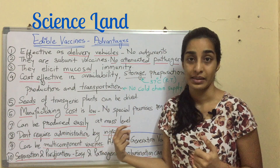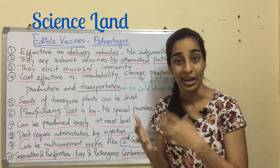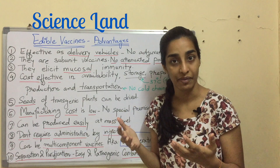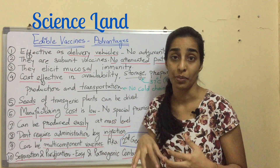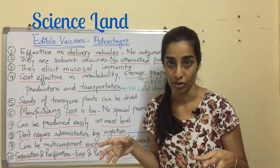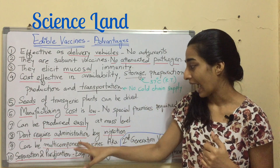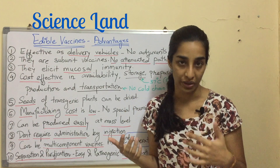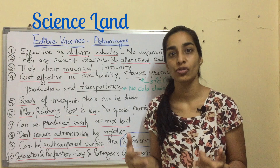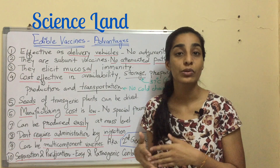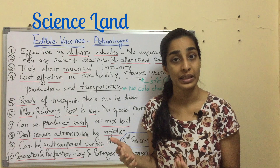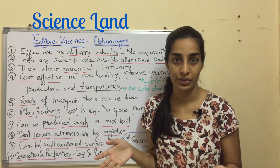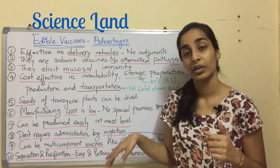Edible vaccines can be produced easily at mass level because production is in plants, making it easier compared to vaccines made in animal cell culture. They also don't require administration by injection — they are administered orally. This means reduced use of healthcare professionals and a lower risk of contamination since syringes are not used.